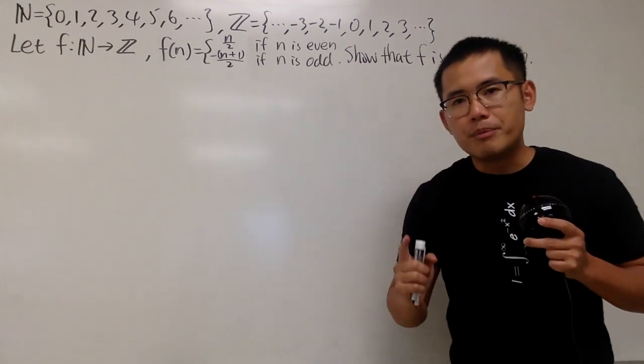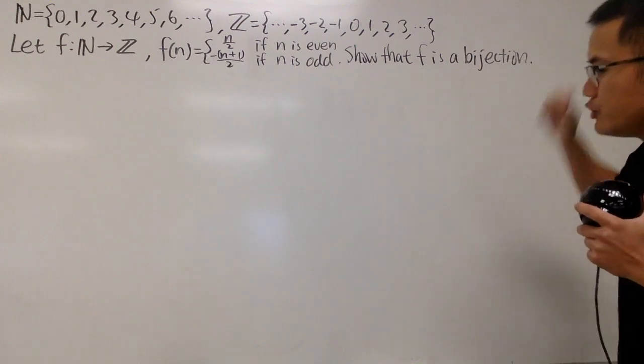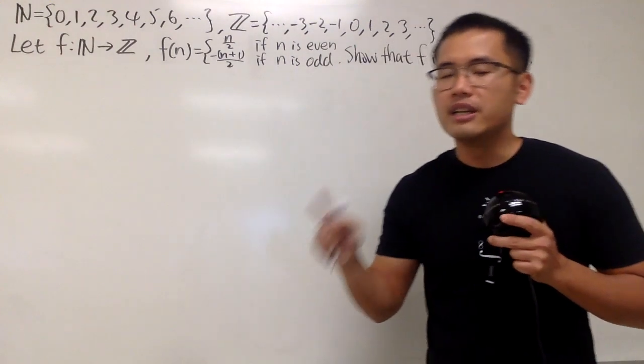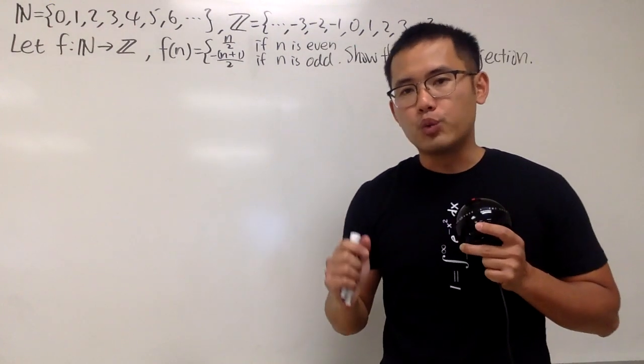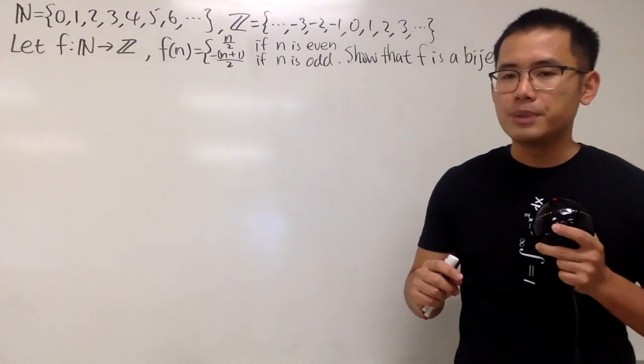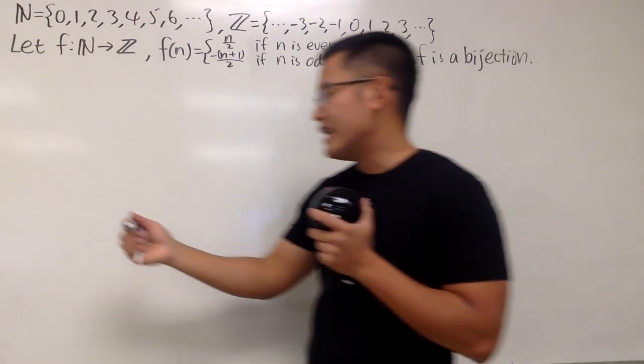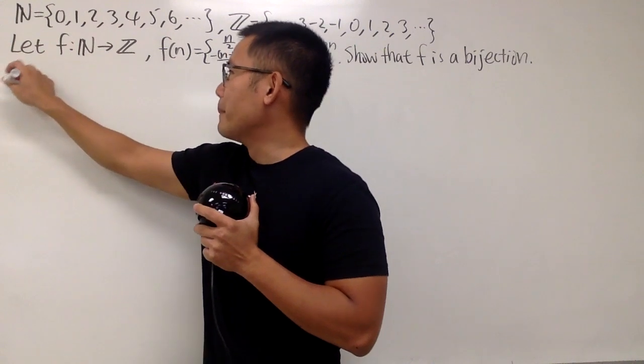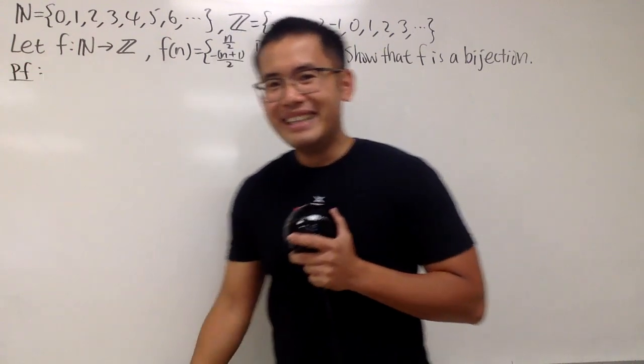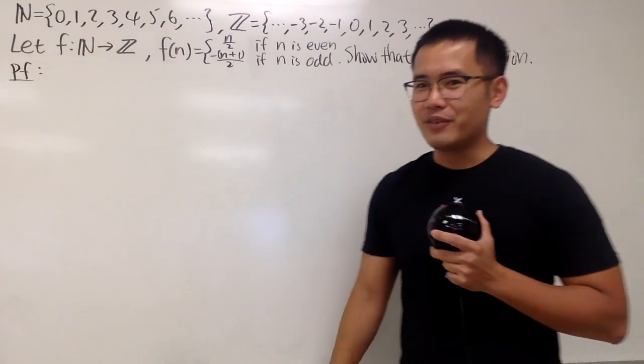In this video, we will just do some proof for f being a bijection. First thing first, we have to remember that to show a function as a bijection, we have to show two things. The first thing is f has to be one-to-one.